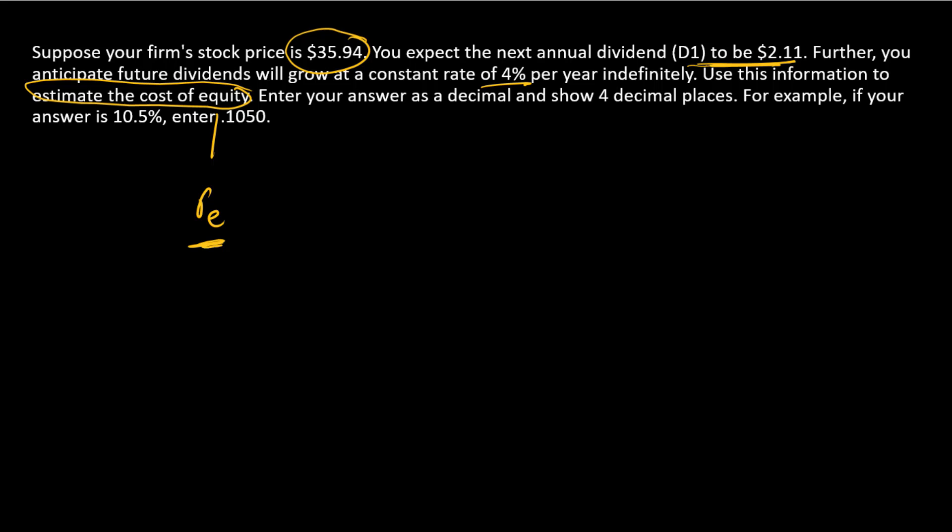All right. So in this particular problem, since we've got constant growth in dividends, we know that the valuation formula P equals D1 divided by R minus G should hold. This is the Gordon dividend growth model. And so this R here, that's going to be our RE.